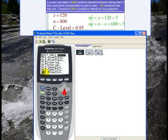1 means a single sample, prop means proportions, and ZInt means a confidence interval using a normal distribution. So I hit ENTER.